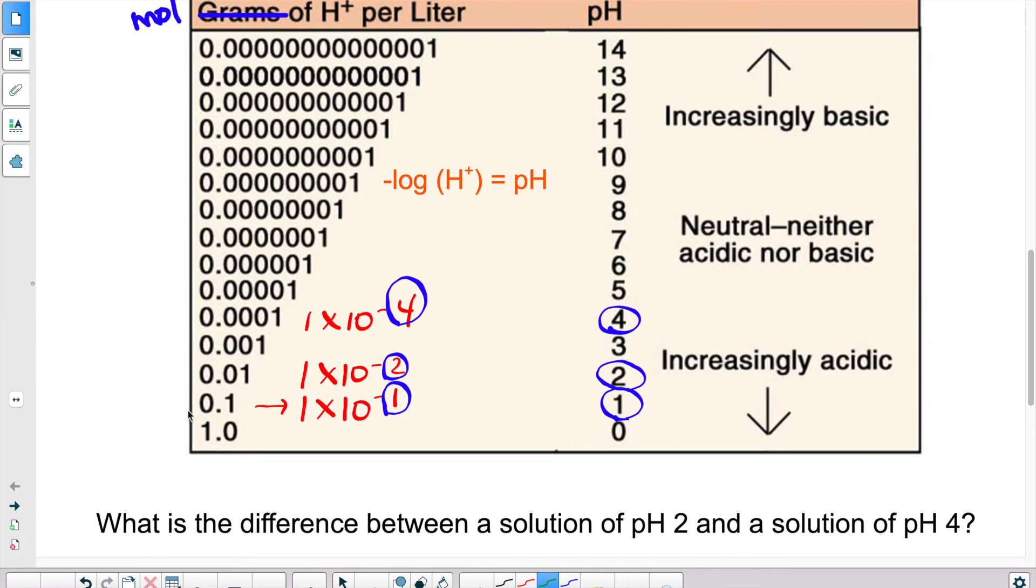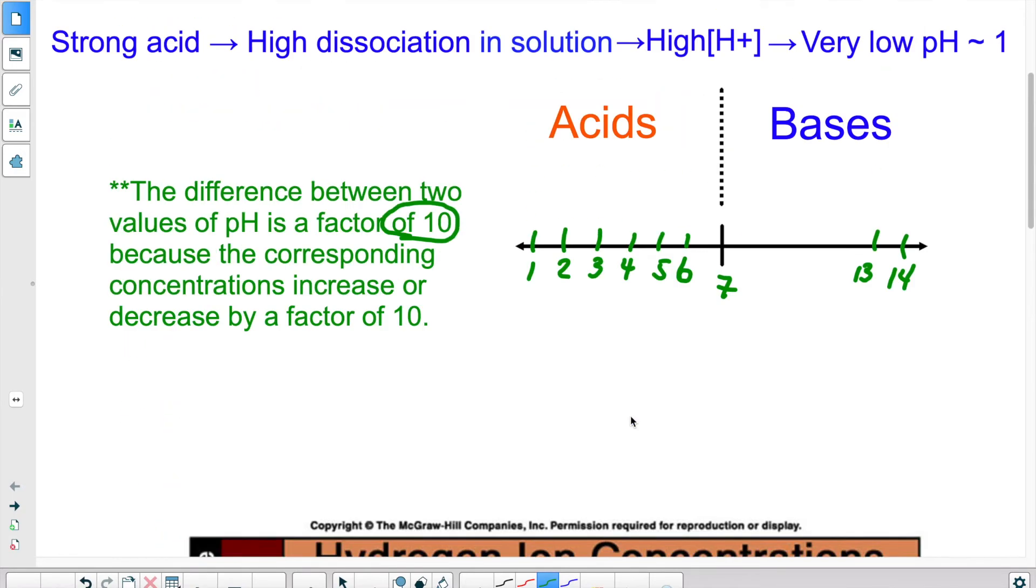the higher the concentration of H plus, so if I compare this concentration to this concentration, this one has a higher concentration relative to this one that has a lower concentration of H plus ions. So this one having the higher concentration would actually have a lower pH. So that's why, when we look at the scale, we say that this is more acidic, higher concentration of H plus ions. This is less acidic, lower concentration of H plus ions.